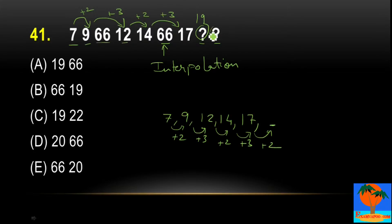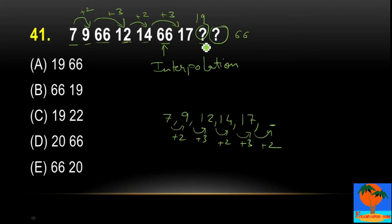What will be the next term? We can see that every 2 terms, after 66, interpolation is done. So the next question mark is 66. The correct answer will be 19 and 66.